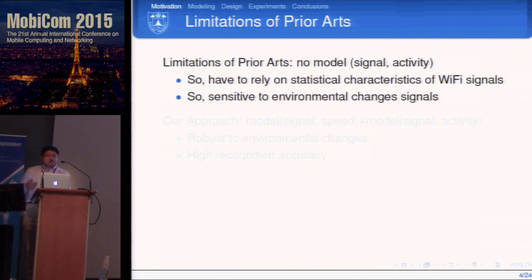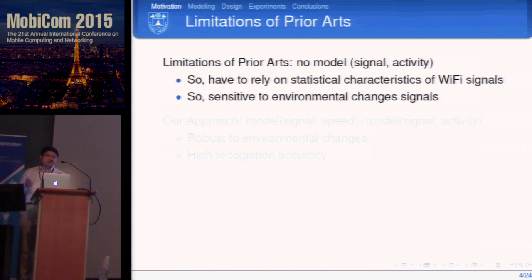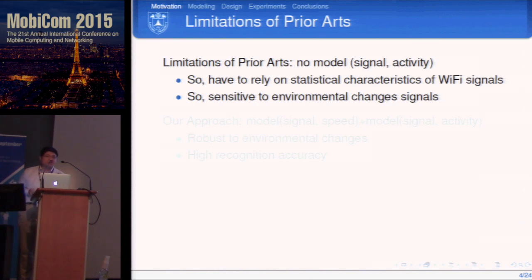Existing work in this area has no models — they cannot quantify movements from signal changes. They use a machine learning approach based on statistical characteristics of Wi-Fi signals, such as the distribution of power changes. This gives only a rough idea about signal changes, and we cannot tell what in the Wi-Fi signal is specifically caused by human activities.